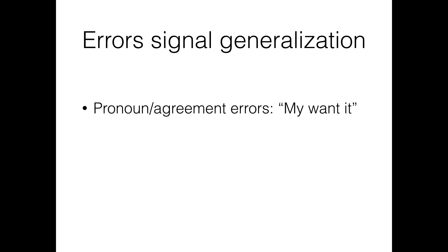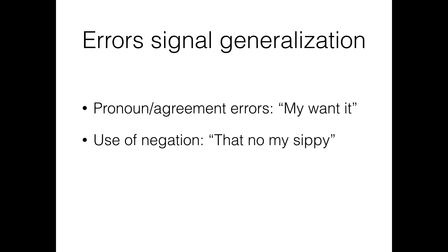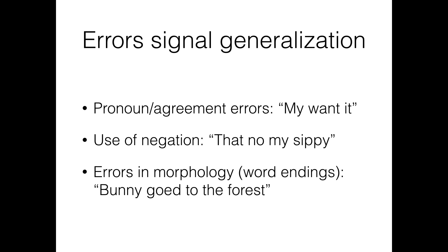Second, children make some pretty interesting errors early on, suggesting that they are actively making generalizations about how language works, and sometimes these aren't quite right. For example, they make pronoun or agreement errors like 'my want it.' They use negation in ways that are different than adults, like 'that no my sippy.' And they make errors in morphology — the endings on words that tell us about how many things there are, what tense a verb is in, and so forth — like 'bunny go to the forest.' In each of these cases, the error shows that the child is trying to figure out the right rule and has, sometimes briefly, settled on an intermediate rule that works some of the time.